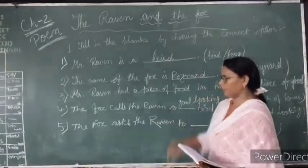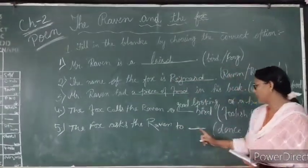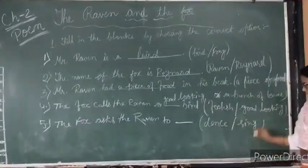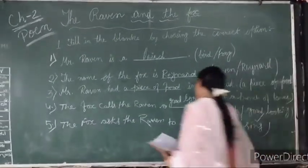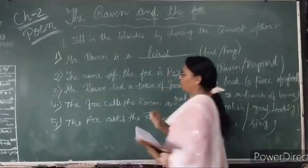And the fifth one: the fox asks the Raven to dance or sing? Sing. Very good. So your answer will be sing.